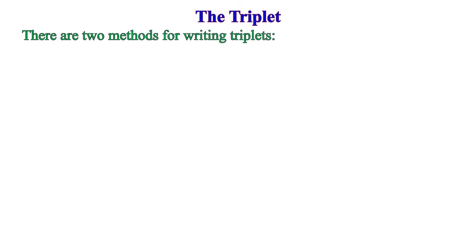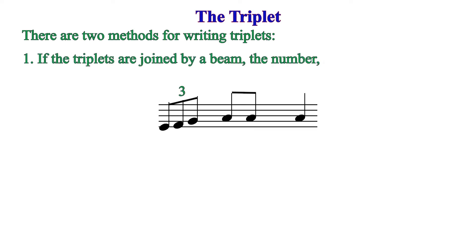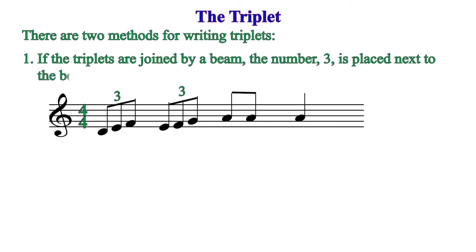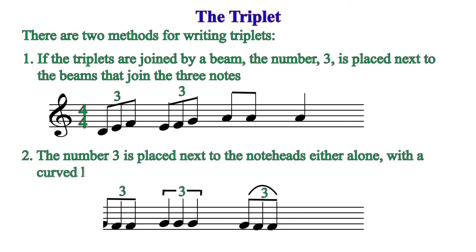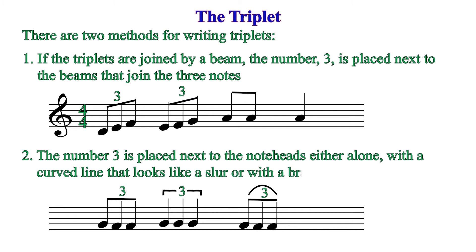There are two methods for writing triplets. The first method is placing the number three next to the beams that join the three notes. In the second method, the number three is placed next to the note head, either alone, with a curved line, or with a bracket.